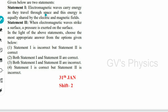Next is a theory question. Statement 1: electromagnetic waves carry energy as they travel through space, and this energy is equally shared by the electric and magnetic fields — this statement is true. Statement 2: when electromagnetic waves strike a surface, a pressure is exerted on the surface — this is also true, because the waves transfer momentum, resulting in a force on the surface. Both statements are correct, so option 2 is the right answer.